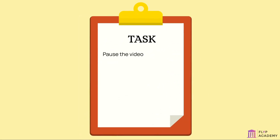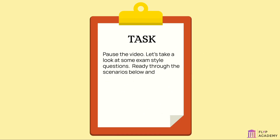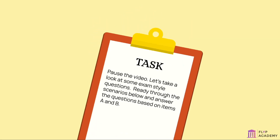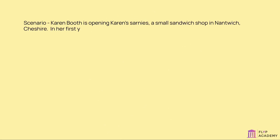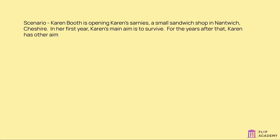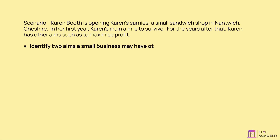Task: pause the video. Let's take a look at some exam style questions. Read through the scenarios below and answer the questions based on items A and B. Scenario: Karen Booth is opening Karen's Sarnies, a small sandwich shop in Nantwich, Cheshire. In her first year, Karen's main aim is to survive. For the years after that, Karen has other aims, such as to maximise profit. Identify two aims a small business may have other than survival and maximising profit. (Two marks.)